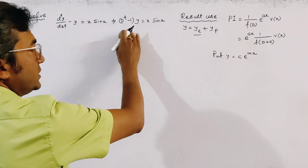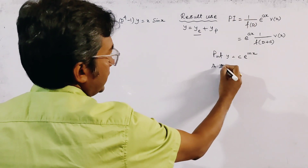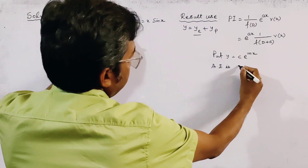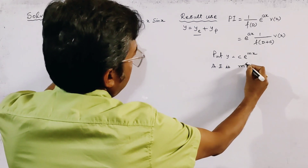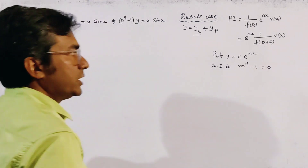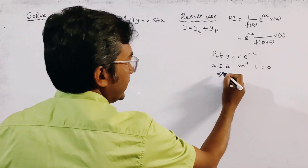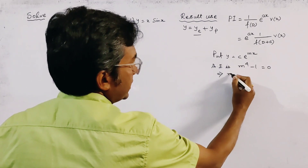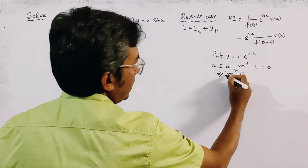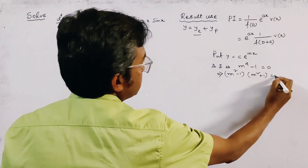Then we get the auxiliary equation, which is given by m to the power 4 minus 1 equals 0. And by factorizing it, we get m squared minus 1 times m squared plus 1 equals 0.